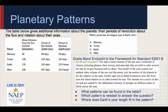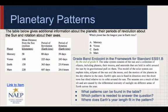Grade band endpoint for standard ESS1.B: by the end of grade 8, the solar system consists of the sun and a collection of objects — including planets, their moons, and asteroids — held in orbit by gravitational pull. This model can explain tides, eclipses of the sun and moon, and the motion of planets relative to the stars. Earth's spin axis is fixed in direction over the short term but tilted relative to its orbit; the seasons are a result of that tilt. Ask students to look for patterns in the table and compare each planet's data with Earth's. How are revolution and rotation similar and different?